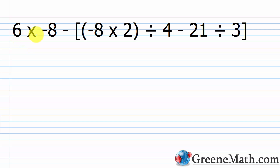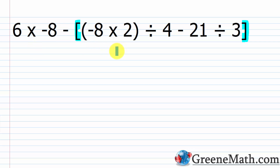For the next problem: 6 × (-8) minus, inside brackets, [(-8 × 2) ÷ 4 - 21 ÷ 3]. We have brackets, and inside them we have parentheses around negative eight times two. That's my highest priority. Negative eight times two — negative times positive is negative, eight times two is 16 — so that's negative 16. We now have: 6 × (-8) - [(-16) ÷ 4 - 21 ÷ 3].